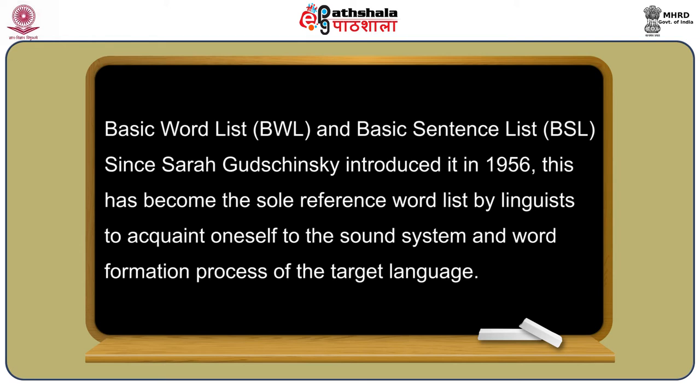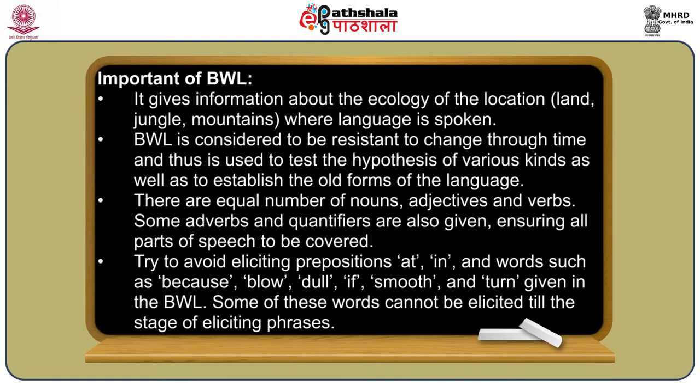There is another tool I want to talk about: the basic word list. In 1956, Sara Swadesh — also called Swadesh Guchinski — made a basic word list to start any field work in any unknown language, to get a very first-hand knowledge. This basic word list is also called the 200 basic word list, though there are a little fewer than 200 basic words. The list has become the sole reference point for linguists across the globe to start field work. I would request that you also start your field work by referring to this basic word list, which has already been given to you in Module 7.